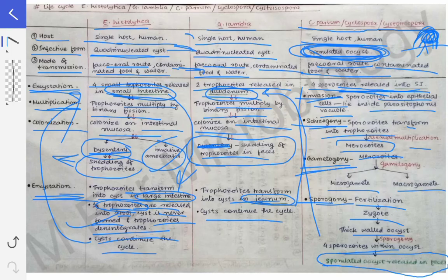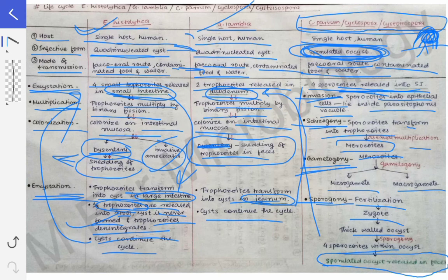This is the whole life cycle of histolytica, Giardia lamblia, and the coccidian parasites in a single piece. If you write and practice this whole table two or three times, it will be printed in your mind. The life cycle of Giardia lamblia and Entamoeba histolytica are important for the exam, but you can leave Cryptosporidium parvum, Cyclospora, and Cystoisospora as they are not so important for university exams. In the third part, we will discuss the lab diagnosis of these protozoans.